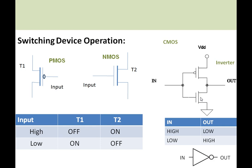The inverter logic is: whenever the input is high the output will be low, and whenever the input is low the output will be high. Here you can see how the inverter works — when the input is high, the PMOS is off and the NMOS is on, so the output will be low (ground). When the input is low, the PMOS is on and the NMOS is off, so the output will be high (VDD).